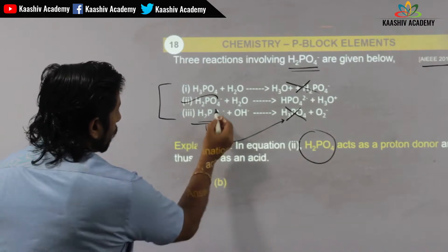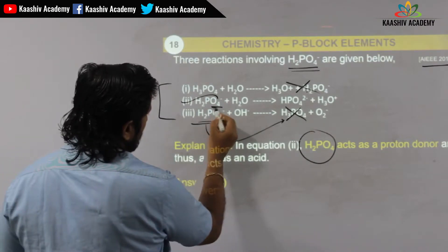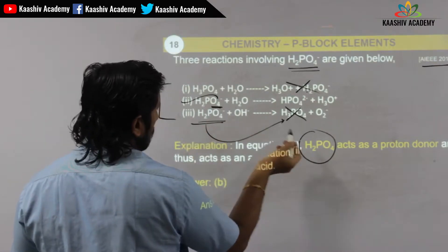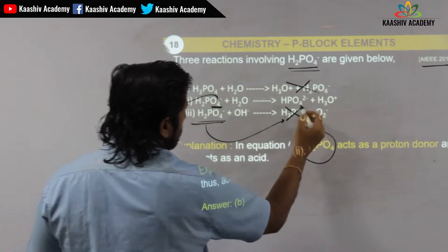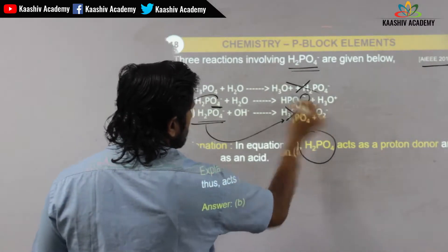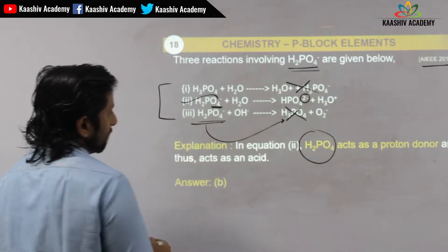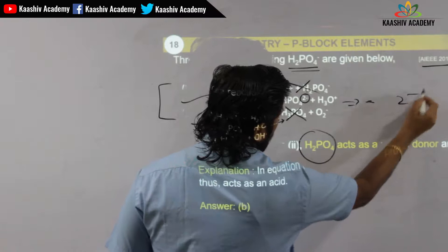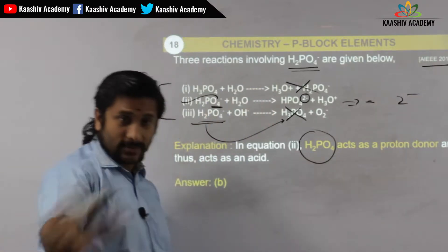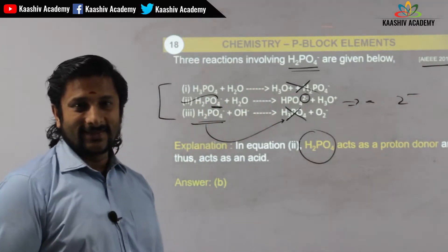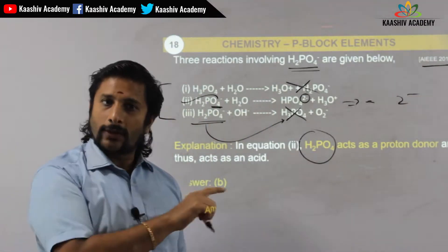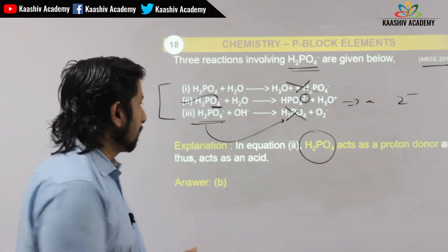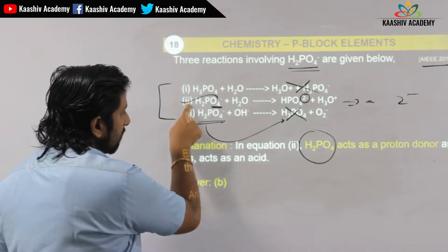S2PO4 minus loses a proton electron, giving 2 minus. It lost something — minus 2. So the answer is option B.